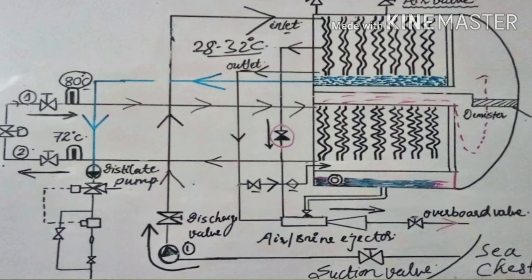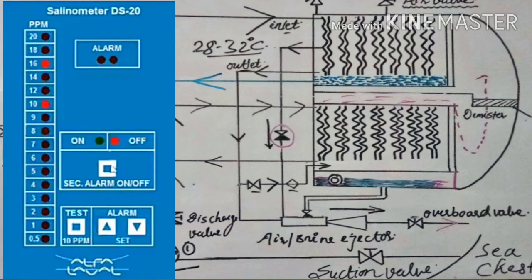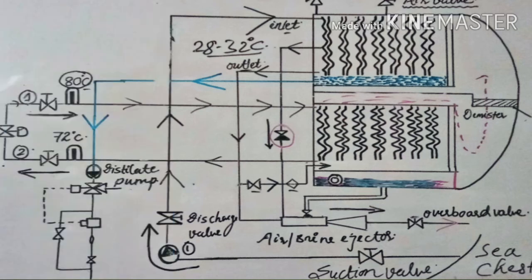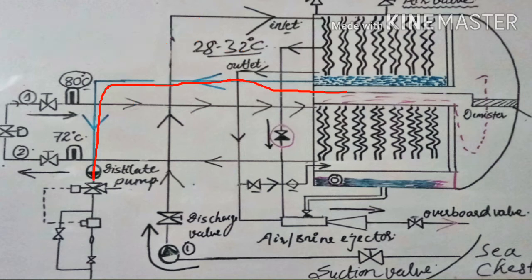Open the main engine jacket cooling water inlet and outlet to the evaporator gradually — mark my word, gradually. These two valves are opened for heating purpose. Next, in the operating panel, switch on the salinity alarm panel for measuring purity of the fresh water produced. This alarm is both visual and audible. There will also be a sight glass provided at the suction line for the distillate pump — make sure condensate water is coming to the suction line.